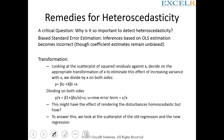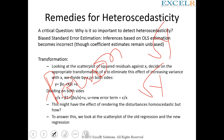If the data follows a Poisson distribution, you take the square root of y or the square root of y plus the square root of y plus one. There are multiple ways of transforming the data — you can take the logarithm, exponential, square of the variables, or reciprocal of the variables.